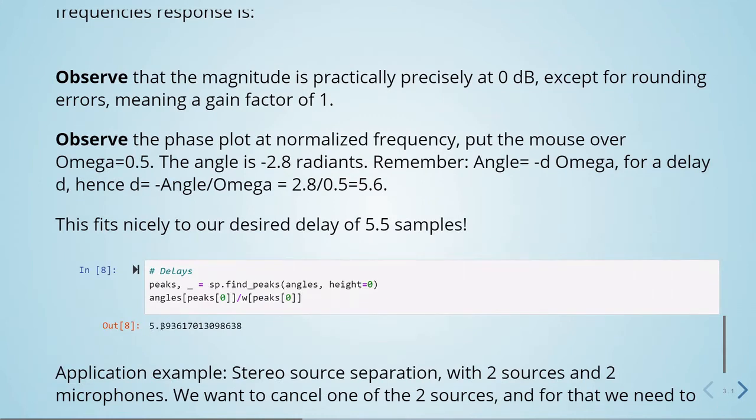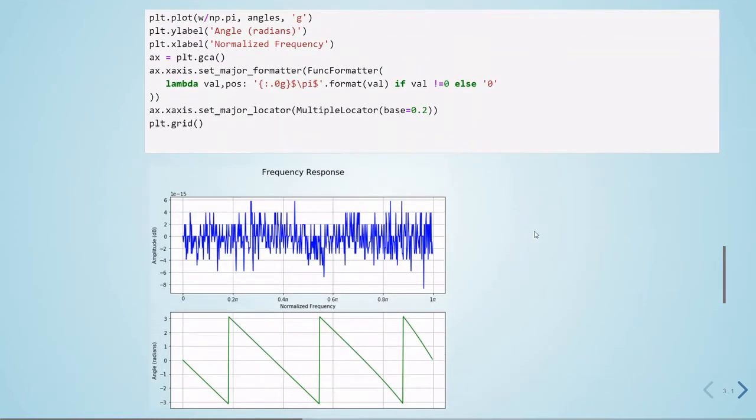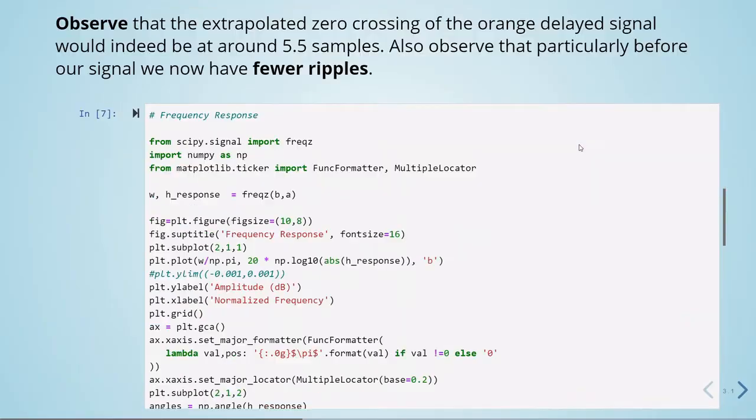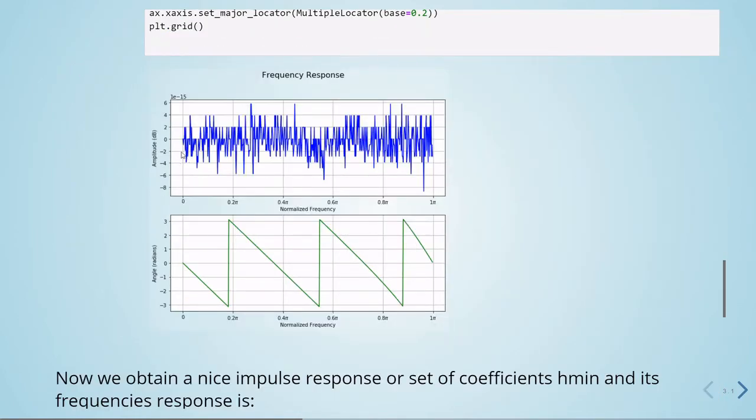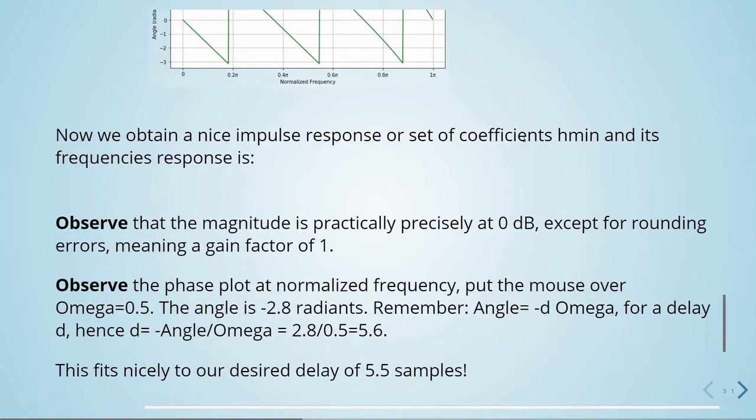We also see the phase plot at normalized frequency. We can calculate if we use this here. We have 5.4, which is almost our 5.5 samples. This is another approach using IIR all-pass filters, which means we have a gain factor of 1.